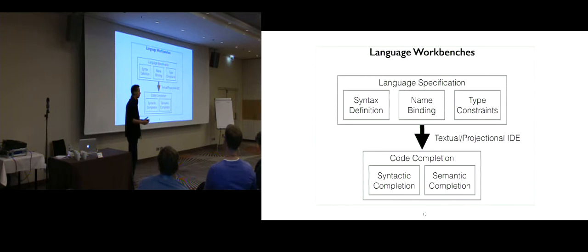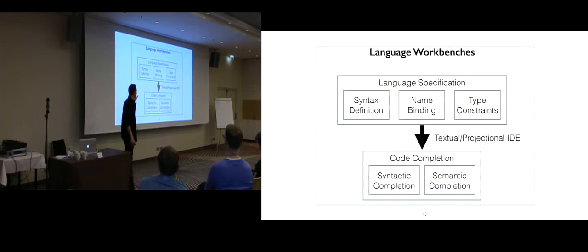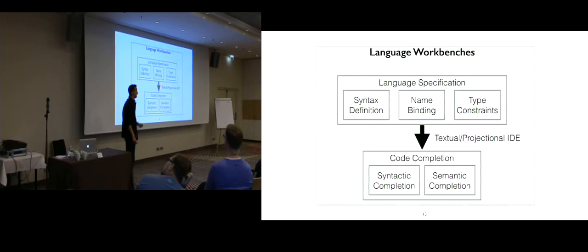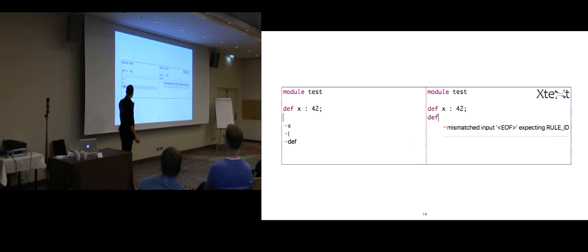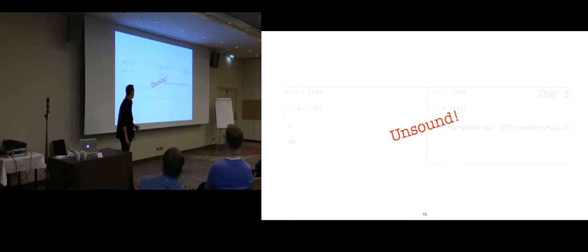What language workbenches do is try to approach this in a more principled way — they derive an IDE, textual or projectional, based on the language specification. In this case, considering code completion, based on the language specification we derive syntactic and semantic code completion. But even though language workbenches do it in a principled way, they also suffer from the same problems. For example, in Xtext you can have a proposal that if you select it, you get a syntax error — which is unsound.